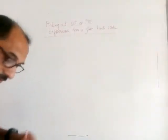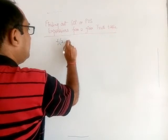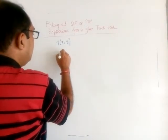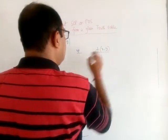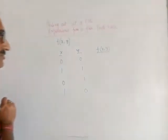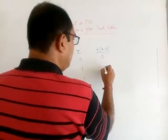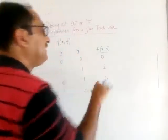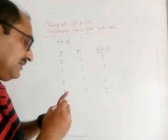So let us say we are given a truth table like this. We have been told that a function f(x, y) gives you this truth table. When x=0, y=0, output is 0. When x=1, y=1, output is 1. When x=0, y=1, output is 0. And when x=1, y=0, output is 1. This truth table will be given to you in the question. On the basis of this truth table, we have to find out the POS or SOP.